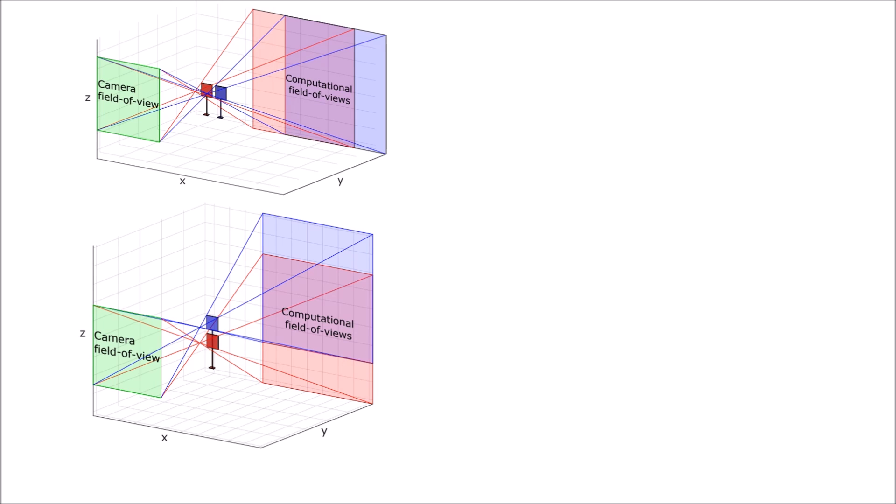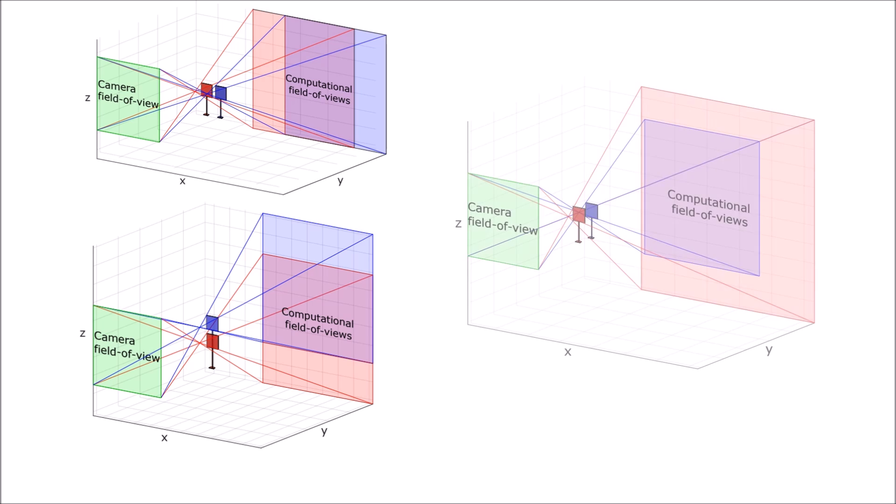Different occluder positions emit different computational fields of view, with shifts in the X and Z position resulting in respective shifts in the computational field of view. Similarly, changes in the distance from the imaging wall to the occluder, or the occluder size, results in scaling of the computational field of view.